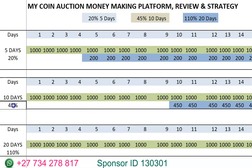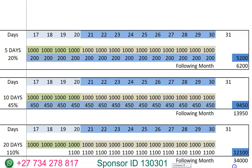For the 10-day variation, which gives 45 percent: if you start the month by putting in 1,000 rand and continue every day for 10 days, on the 10th day you are going to be able to take out 450 rand. If you continue without topping up to the end of the month, you are going to make 9,450 rand on top of the money you initially put in. If you continue into the next month without stopping, you'll be able to make 30,950 rand.